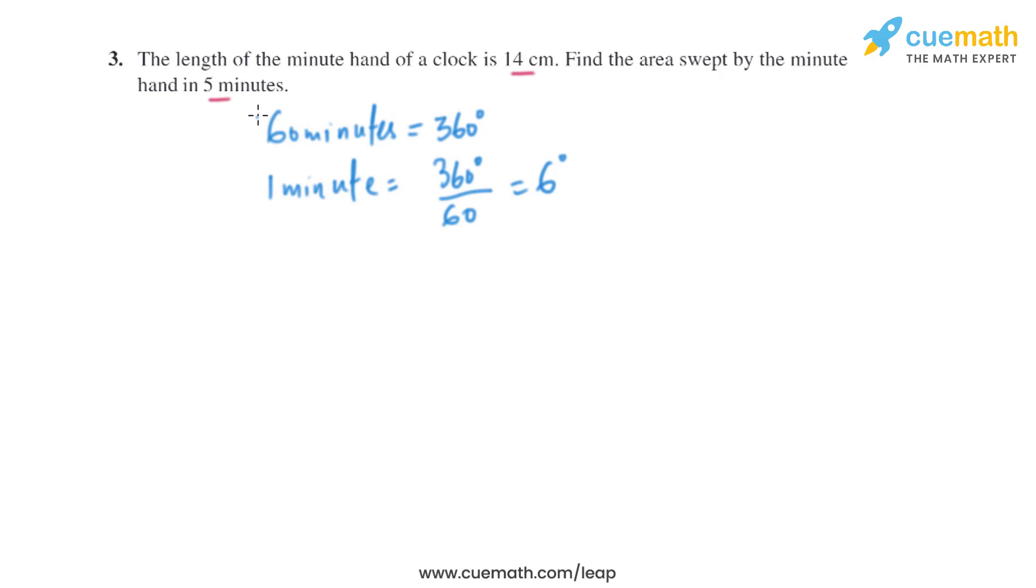In 1 minute, the minute hand will move 6 degrees. Now let's find the angle the minute hand will move in 5 minutes. So in 5 minutes it will be 6 times 5, which is the same as 30 degrees.